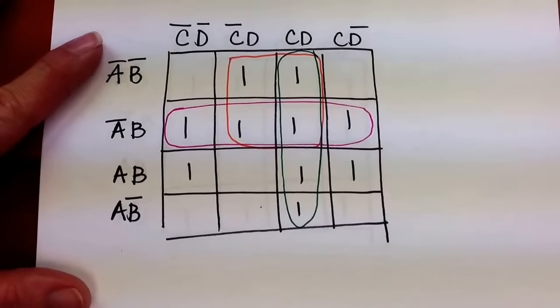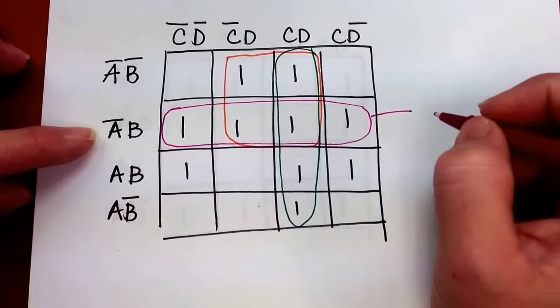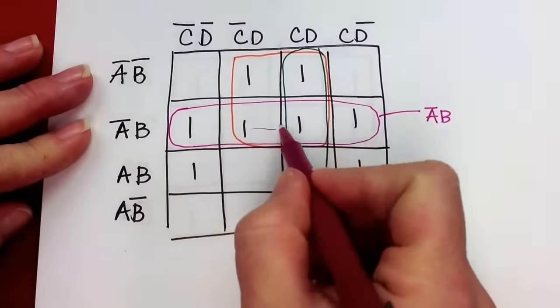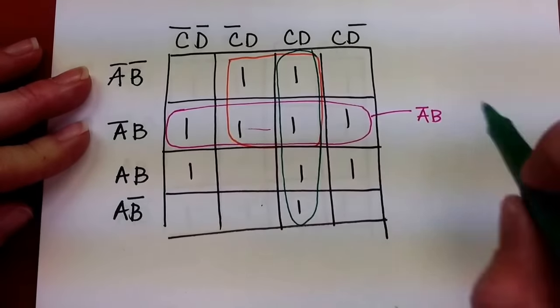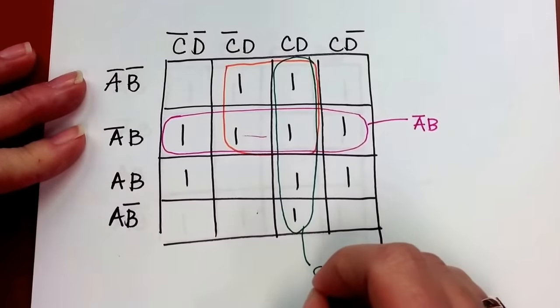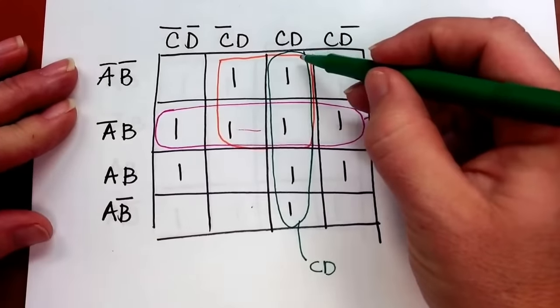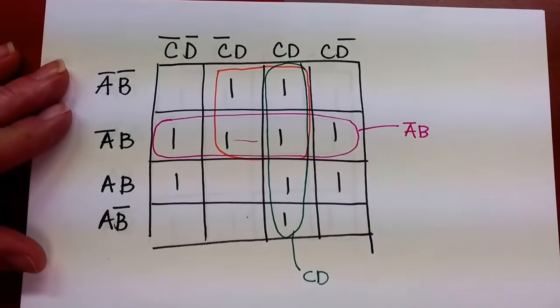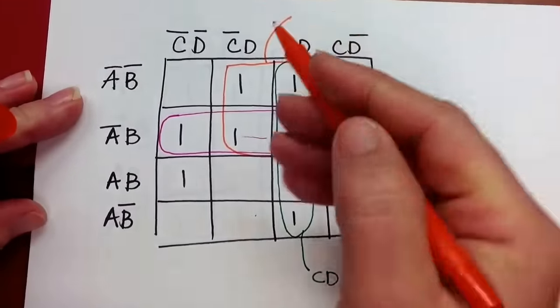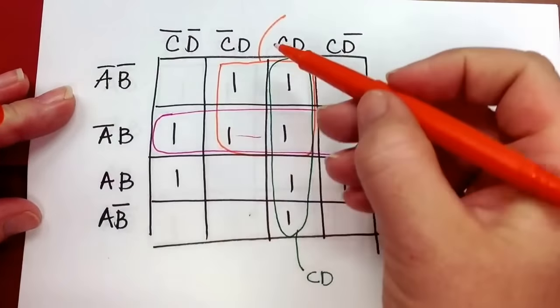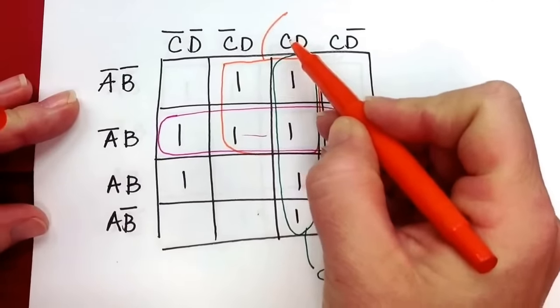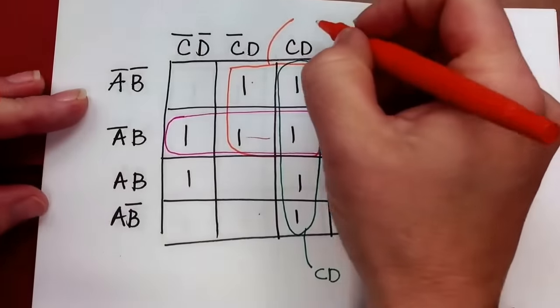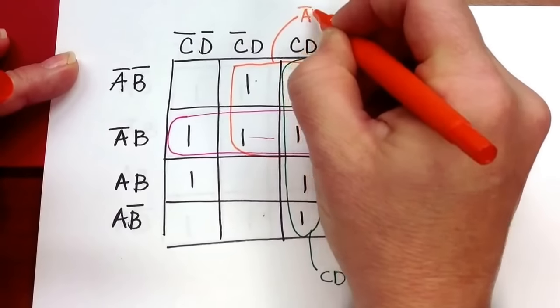So let's look at what some of these terms are. This term for instance is AD because C and D change as I move through here. This term is CD because as I move here both A and B change. This term is going to be AB because as I move from here to here C changes, and not A because as I move from here to here B changes. So not A, B.